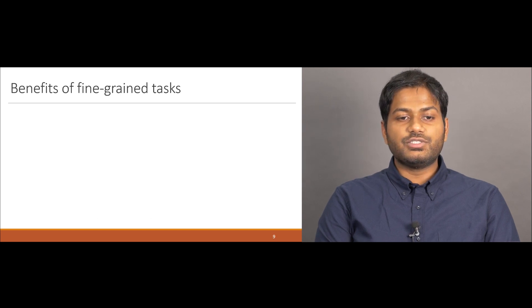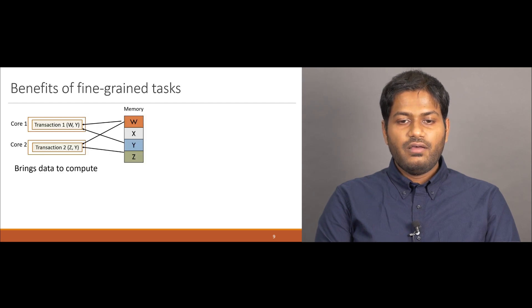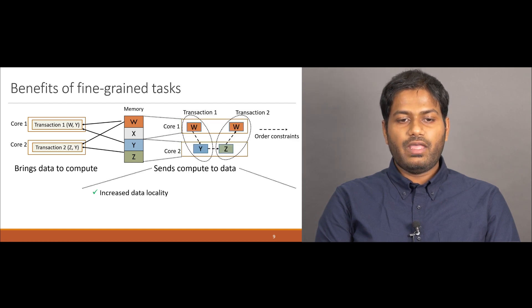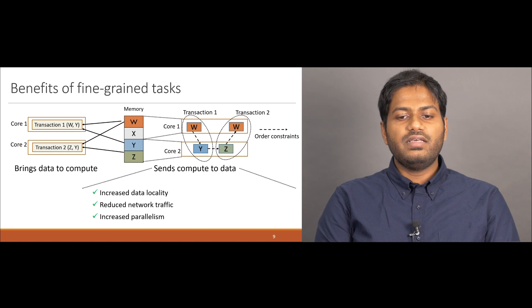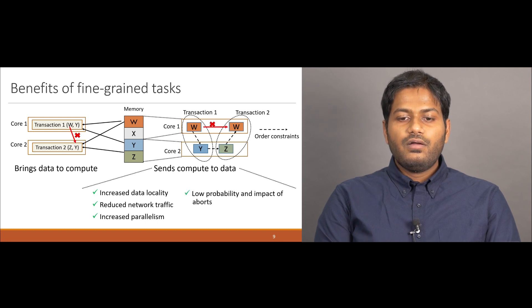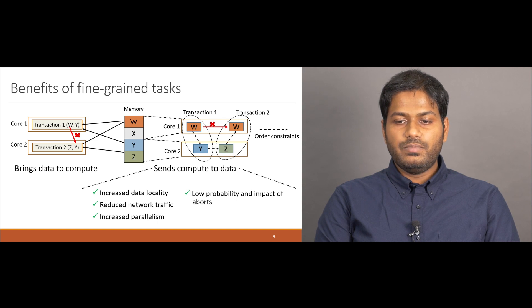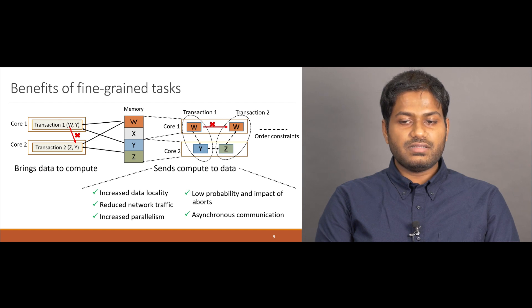Such refactoring of an application to use multiple fine-grained tasks also brings in other benefits. First, instead of bringing data to compute, as is the case in conventional systems, this scheme sends compute to the data, increasing data locality. Second, this scheme reduces network traffic, because the size of each task is much smaller than the cache lines that needs to get moved around. Third, this scheme also increases parallelism, since multiple smaller tasks can now be run in parallel speculatively. Fourth, the probability and impact of an abort under the new scheme is also reduced. This is because if a conflict were to be found, only the directly conflicting tiny task needs to be aborted, not the entire transaction as was the case before. Finally, in this approach, communication is asynchronous because they happen through tasks which are spawned rather than through synchronous memory accesses.